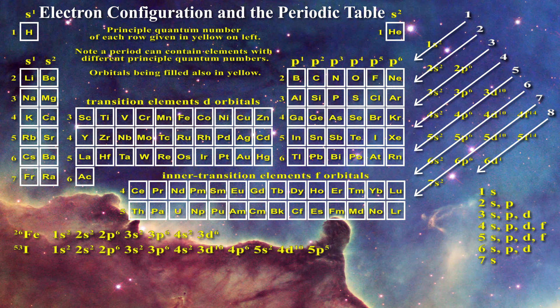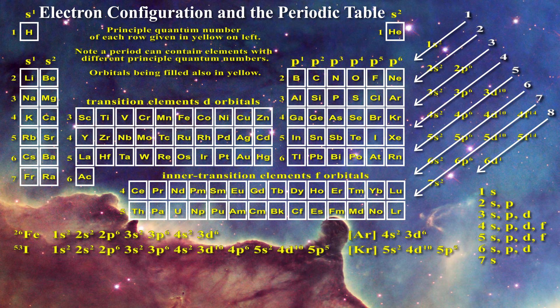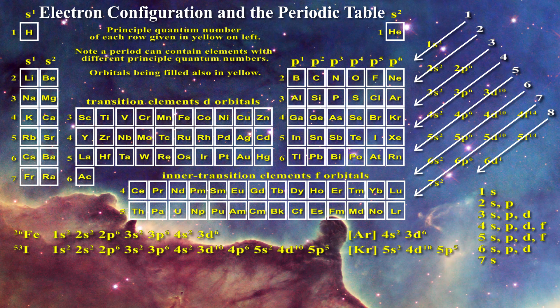To simplify how electronic configurations are written, one typically takes all the orbitals that are filled when reaching a noble gas and replaces them with that notation. So the simplified description for iron is [Ar] 4s2 3d6, whereas for iodine the simplified notation is [Kr] 5s2 4d10 5p5. The noble gas listed in the square bracket just precedes the remaining outer shells.